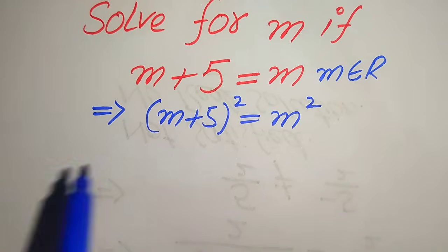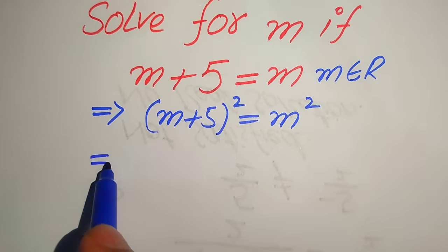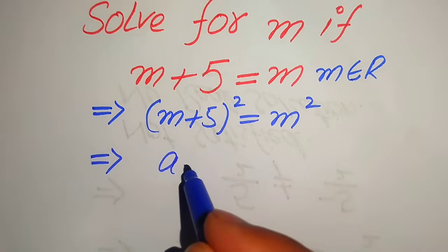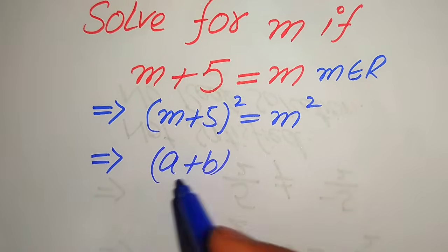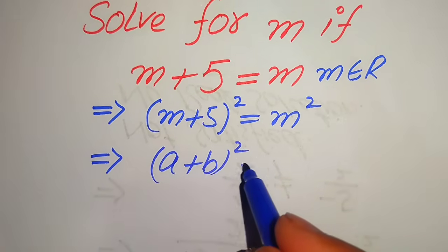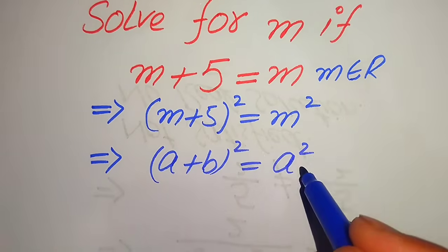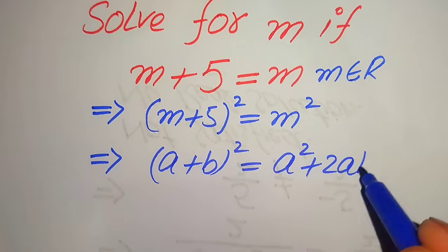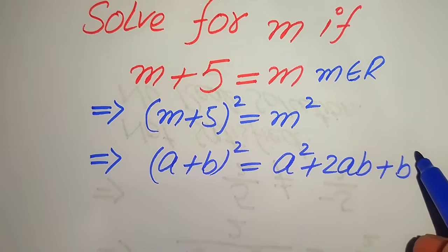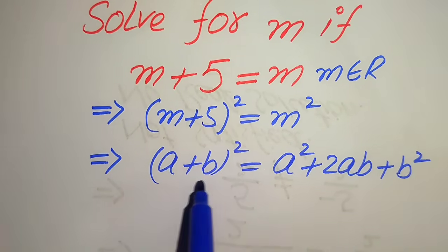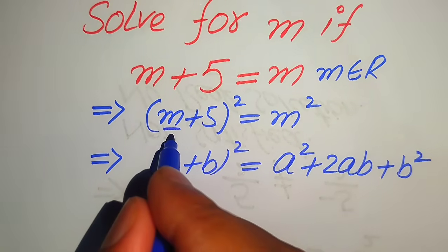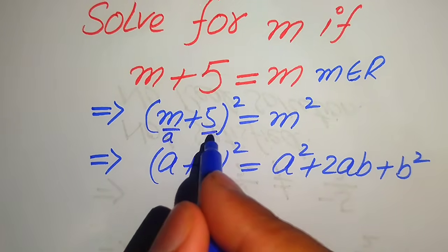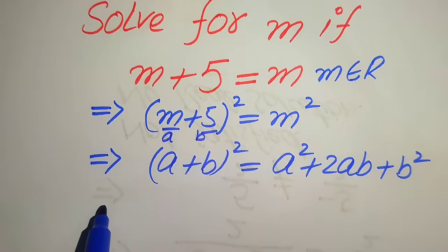We apply this formula: if you have a plus b whole square, it is equals to a square plus 2 times of a times b plus b square. According to this formula, the value of our a is m and the value of our b is 5.